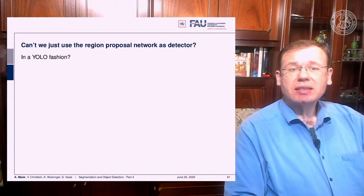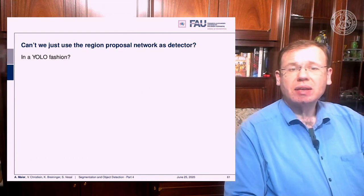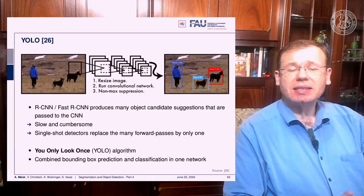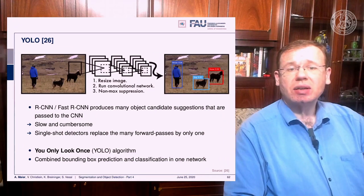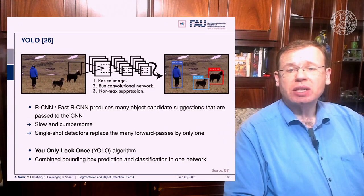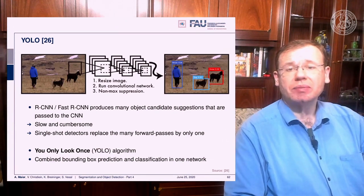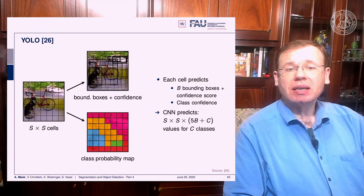Can't we just use the region proposal network as a detector in a you-look-only-once fashion? This is the idea of YOLO, a single shot detector. You only look once — you combine the bounding box prediction and the classification into a single network. This is done by subdividing the image into S times S cells.